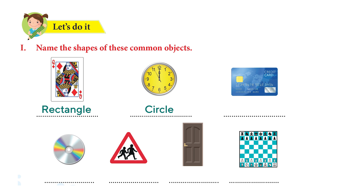The third one is a credit card. What shape is that? It's a rectangle again. And here we have a CD. That's a circle. And the next one is a sign board.